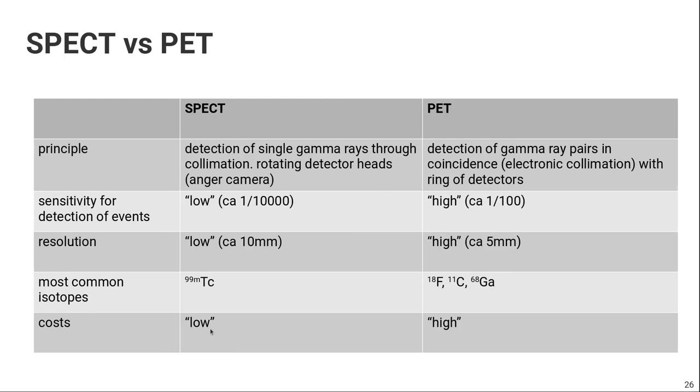So for example, we know that we can image bone metabolism with SPECT tracers. For example, phosphonates labeled by technetium, but we can also image the bone metabolism by sodium fluoride, a PET tracer. And from the image quality point of view, it's way better to do a PET scan. But from the cost point of view, SPECT is way more cost efficient. And that's why nowadays SPECT is still used a lot to image the bone metabolism.